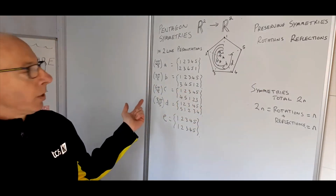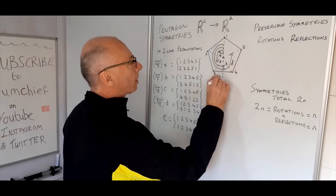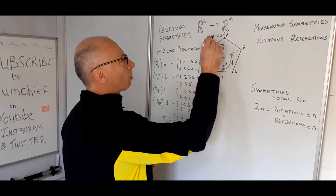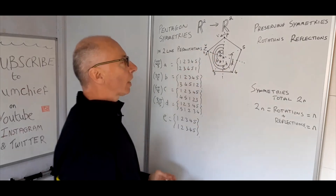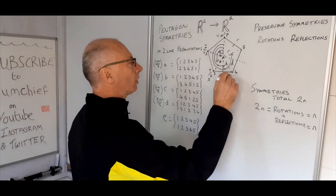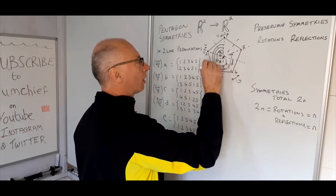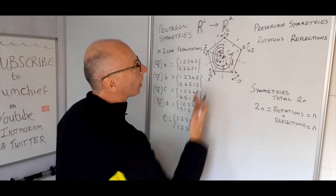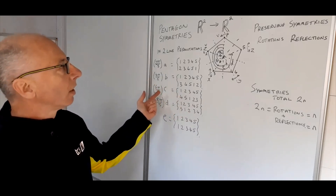Now for reflections. Rather than working through the process of flipping through all the different axes individually, we'll use a shortcut. We have five reflection axes: V goes through the top vertex, W through another vertex, X, Y, and Z. We'll calculate V directly and then compose it with each rotation to find all the other reflections.